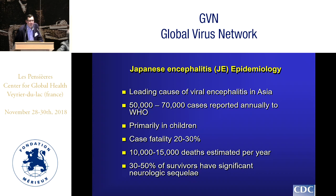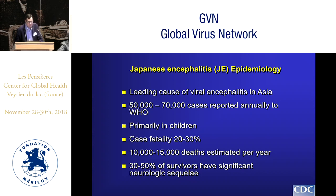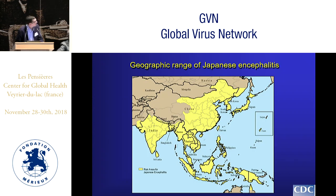I'm going to start by talking about Japanese encephalitis virus and West Nile virus together because clinically they have a lot of similarities. Japanese encephalitis is the leading cause of viral encephalitis in Asia, with anywhere between 50,000 and 70,000 cases reported annually to the World Health Organization — and this is by all intents an underestimate. It is primarily a disease of children, with a case fatality of approximately 20 to 30 percent, and another 30 to 50 percent of survivors go on to have significant neurologic sequelae, often lifelong. This map shows the geographic distribution across northeast and southeast Asia and the Indian subcontinent.